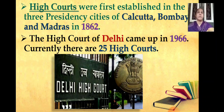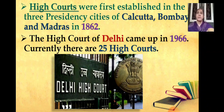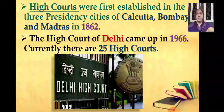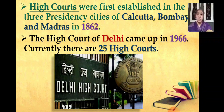High courts were first established in the three presidency cities of Calcutta, Bombay, and Madras in the year 1862. The High Court of Delhi came up in the year 1966. Currently there are 25 high courts. While many states have their own high courts, Punjab and Haryana share a common high court at Chandigarh. The four northeastern states of Assam, Nagaland, Mizoram, and Arunachal Pradesh have a common high court at Guwahati. Andhra Pradesh (Amaravati) and Telangana have separate high courts that started from 1st January 2019. Some high courts have benches in other parts of the state for greater accessibility.